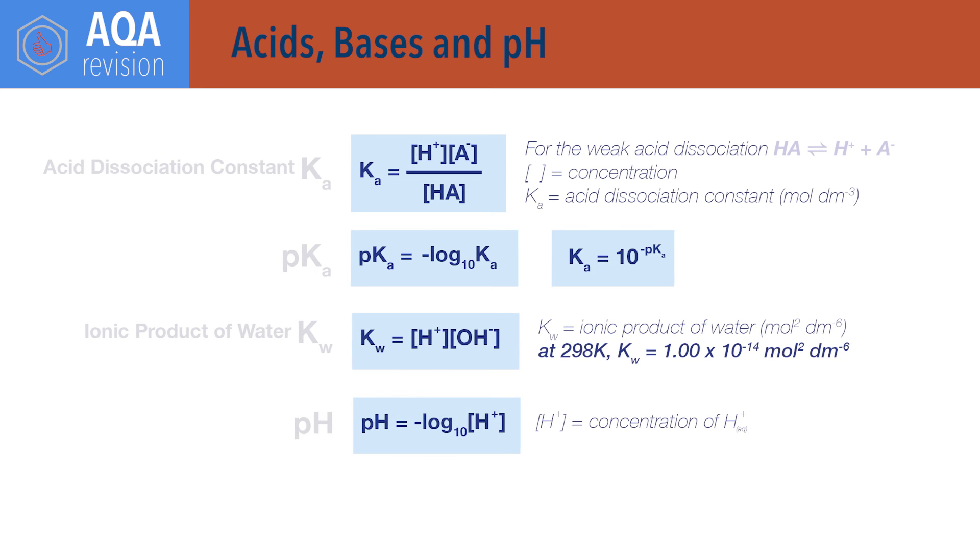pH equals minus log to the base 10 concentration of H plus ions, and concentration of H plus ions equals 10 to the power minus pH.